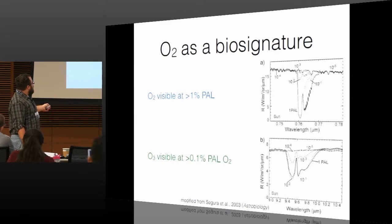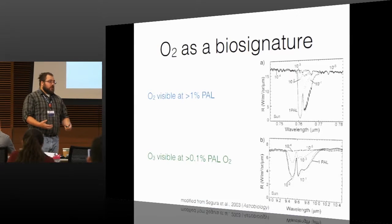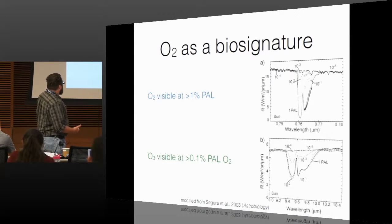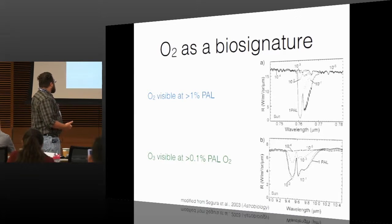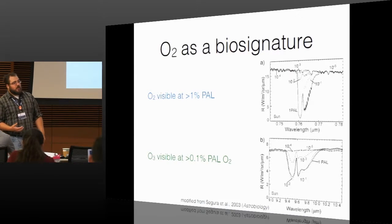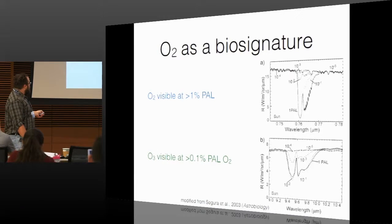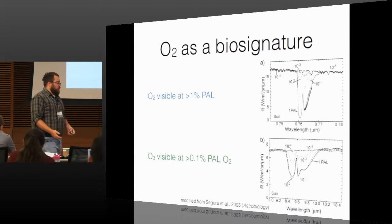So you can see this is 21% oxygen, 1PAL. And as you decrease oxygen, that feature kind of goes away. Now, the nice thing is at low oxygen concentrations, ozone, which is a photochemical byproduct of oxygen, still stays visible. So about 0.1% PAL O2, you have a pretty substantial ozone feature out in the infrared. And so this is how we might detect oxygen in a planetary atmosphere.